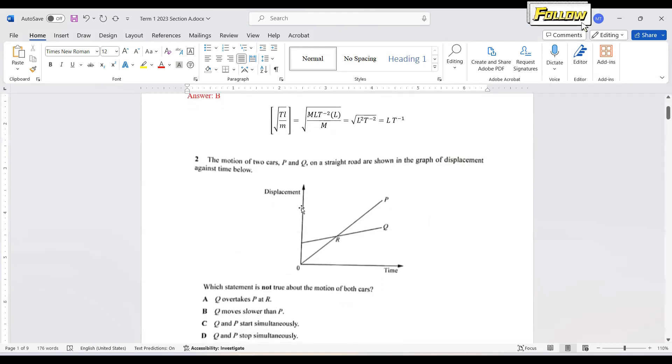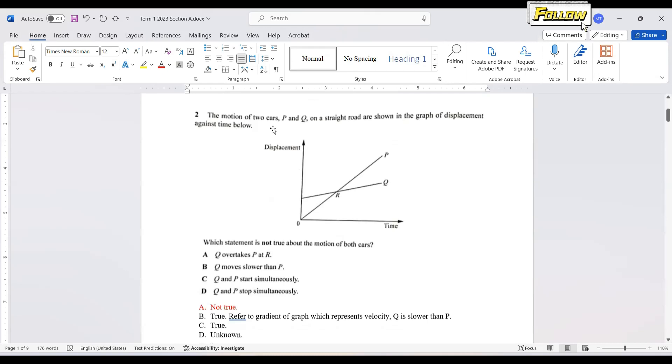We move on to question number 2. The motion of two cars, P and Q, on the straight road are shown in the graph. Which statement is not true about the motion of both cars? Q overtakes P at R. This is displacement against time. So after point R, we could see that P is in front of Q, so it should be P overtakes Q at R. So answer is A.